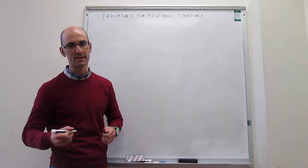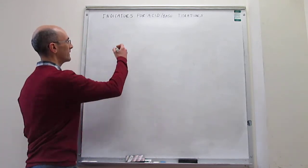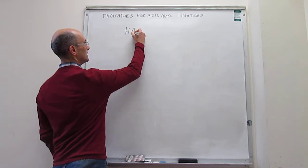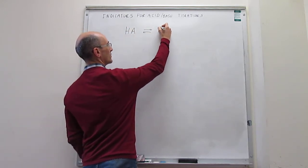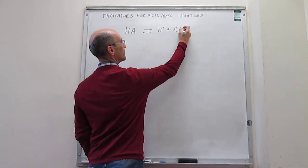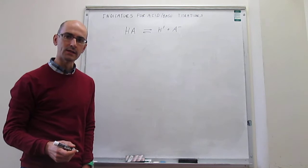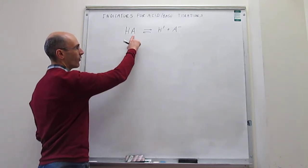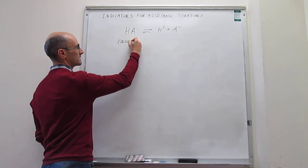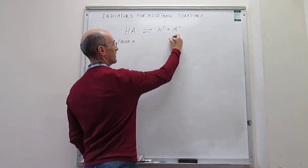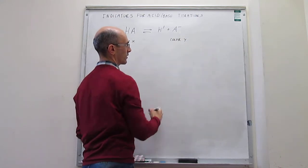Generally, indicators are actually weak acids — like phenolphthalein, for example. The way that they generally work is like this: this will be your indicator, and then there is an acid-base equilibrium where you have formation of the conjugate base. In general, the acid form of the indicator will have a color, which we're going to call X, and the conjugate base of the indicator will have a color that we're going to call Y.